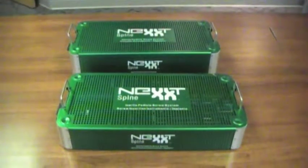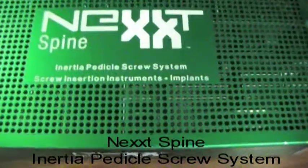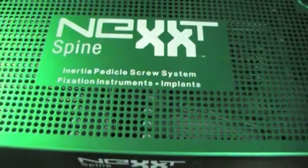The inertia system comes in two cases. The first one is for screw insertion. The second one is for the rods and set screws.